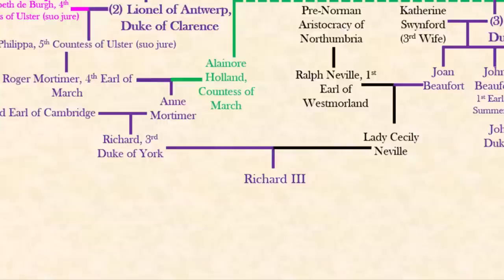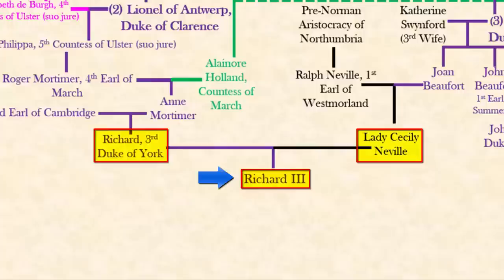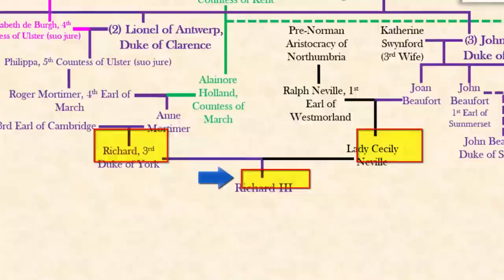Richard III was born in 1452 to the Duke and Duchess of York, Richard and Lady Cecily. He is a key figure in the War of the Roses, which has a lot of people and can be quite confusing. This is his family tree and how it is related to the Kings of England.